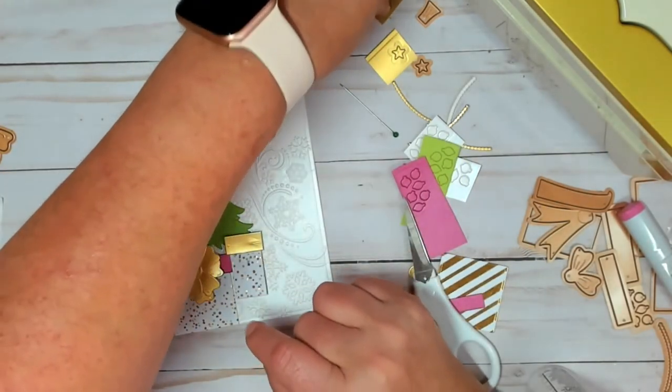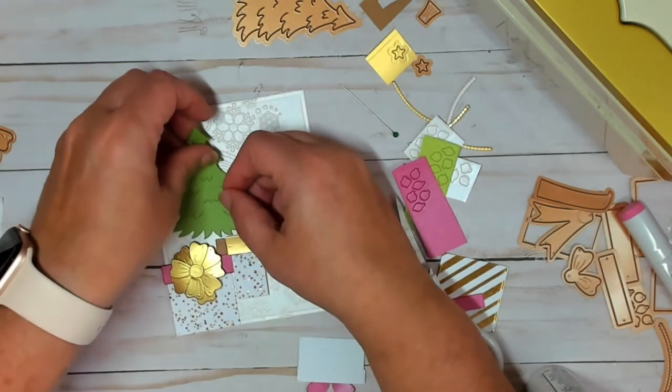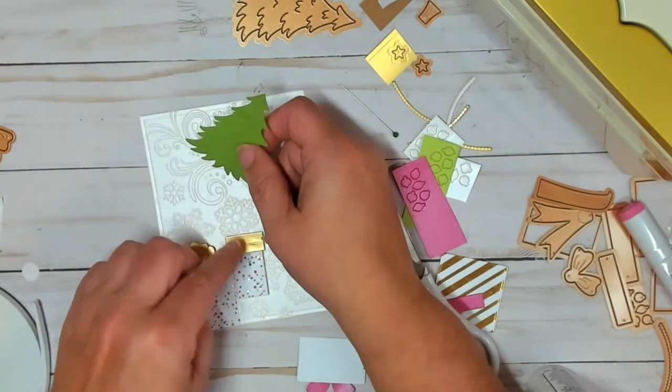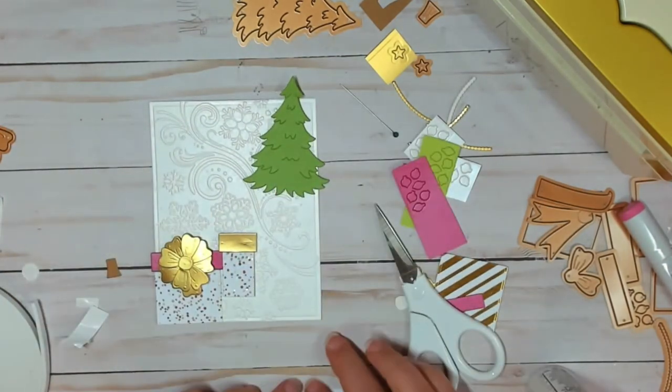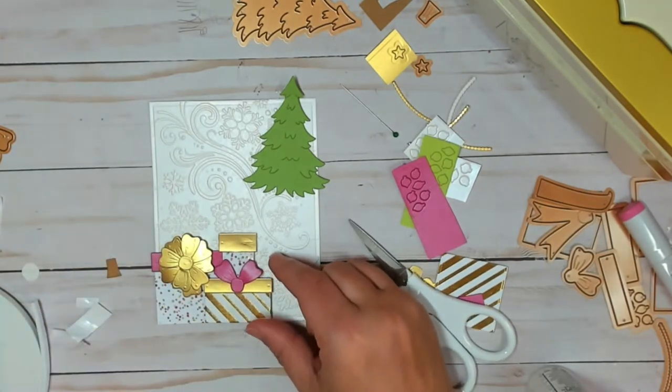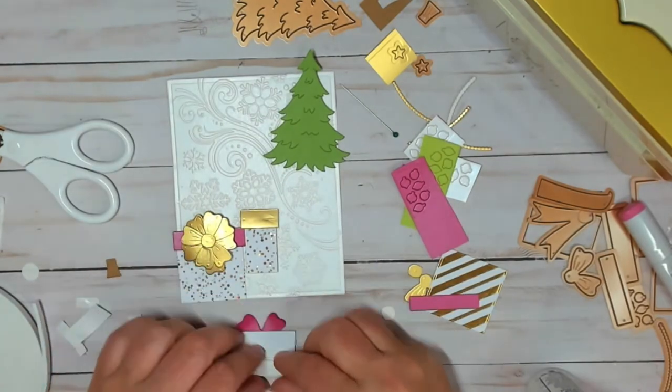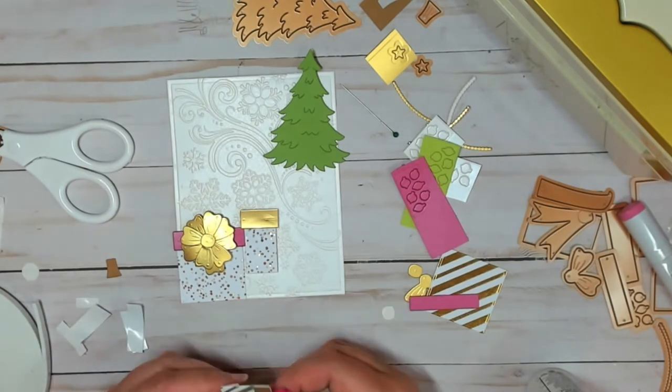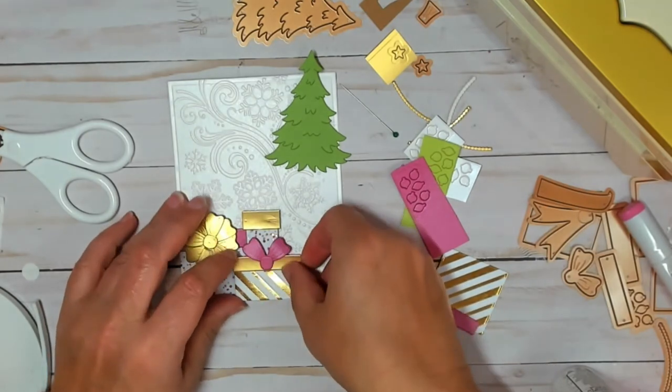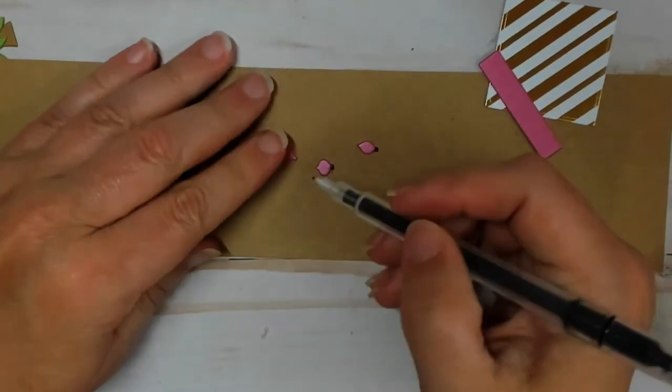Then I used foam adhesive on the small rectangle piece. You can see I'm still trying to figure out how to put the foam adhesive on the back and still fit the tree in there, slide the tree in. I did end up taking it off a couple of times because the tree was a little bit too high up. But it ended up being okay. Now I'm adding foam adhesive to the other small present with the pink bow. That looks so adorable. You can see how thick it is.